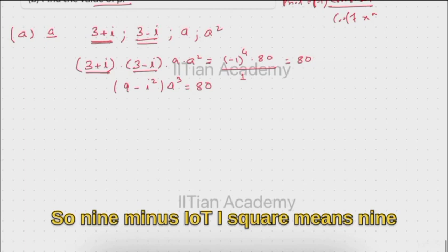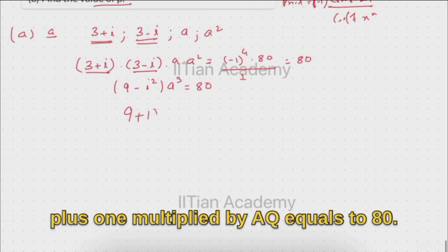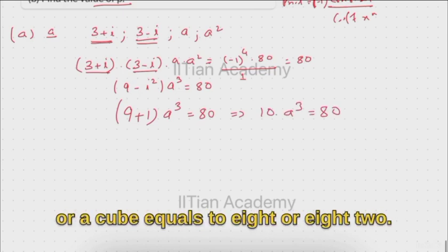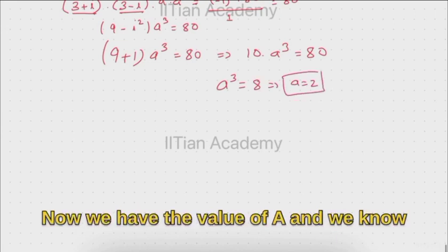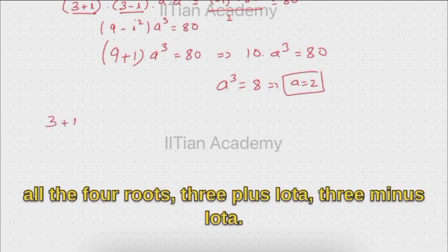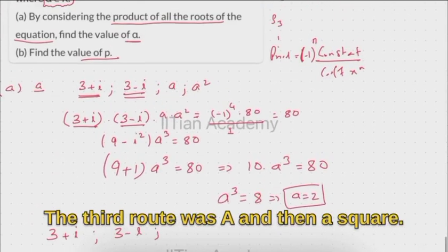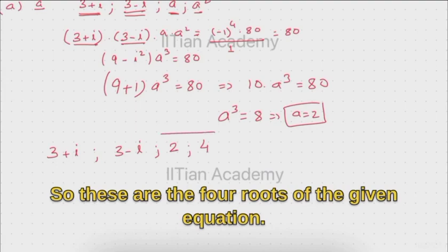So (3 plus iota)(3 minus iota) gives 9 minus iota squared, which is 9 plus 1 = 10, multiplied by a cubed equals 80. Therefore 10 times a cubed equals 80, so a cubed equals 8, giving a equals 2. Now we have all four roots: 3 plus iota, 3 minus iota, a equals 2, and a squared equals 4.